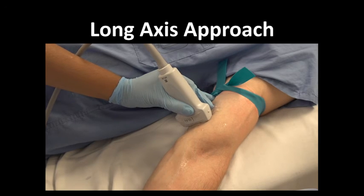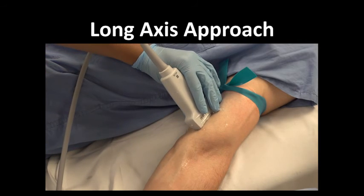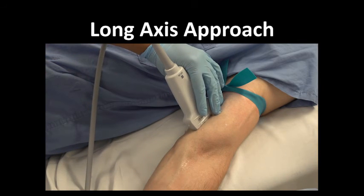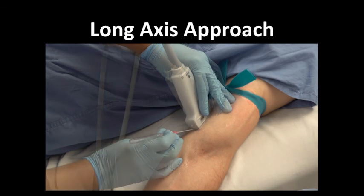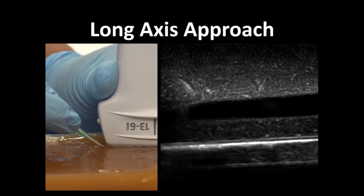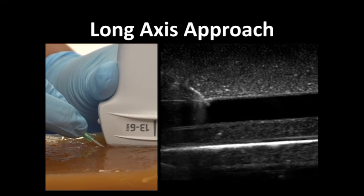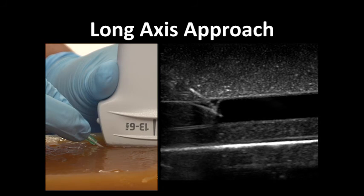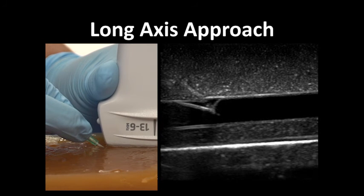To use the long axis approach, find the vessel in short axis and twist the probe 90 degrees. Once you are able to see the vessel in a long axis view, approach the center of the probe surface with the needle at 45 degrees. When using the long axis approach, it will be possible to see your needle tip and needle shaft at all times and watch the approach to the vessel of interest. Gently fan your probe side to side if you lose visualization of your needle tip, needle shaft, or the vessel at any time. Do not advance the needle if you do not see the entire needle tip and the vessel in the same picture.